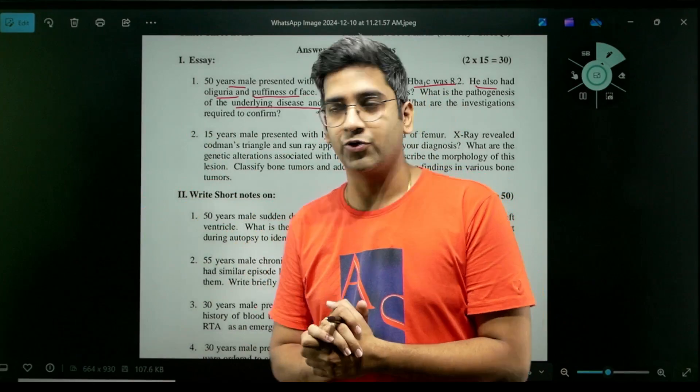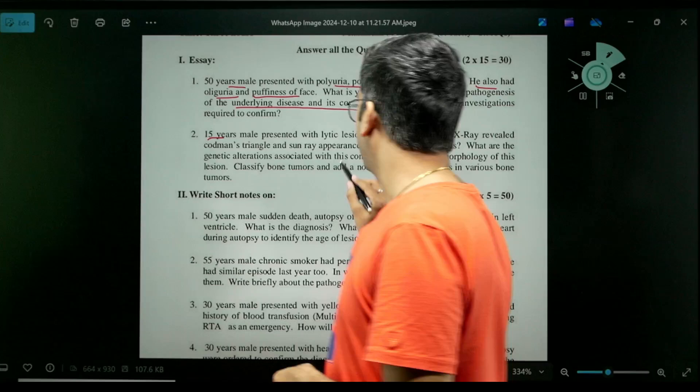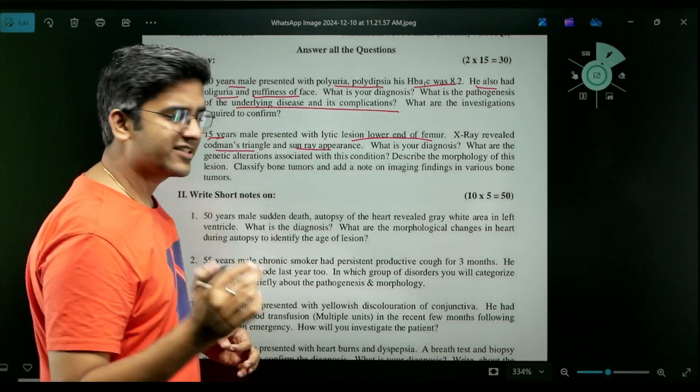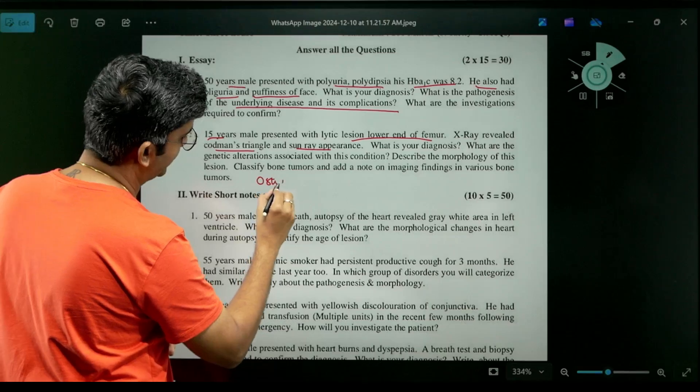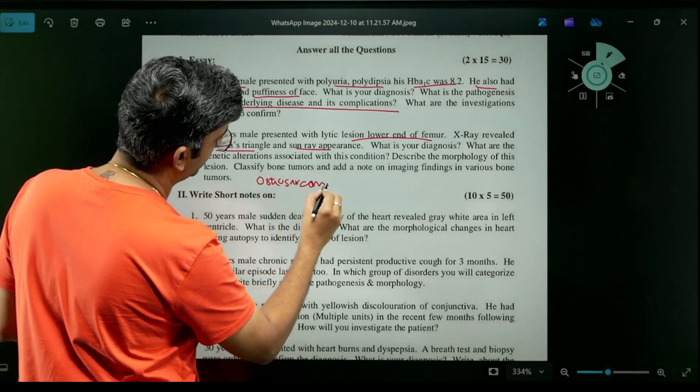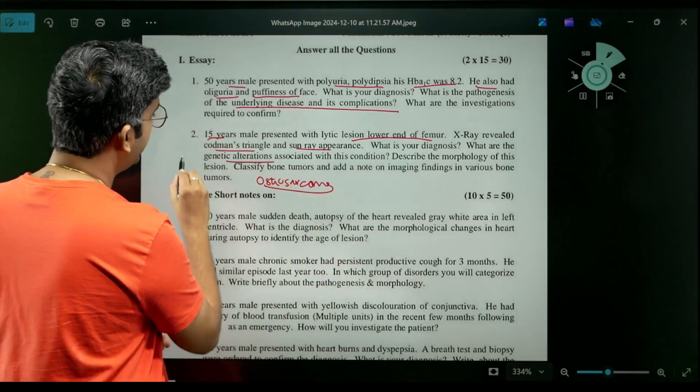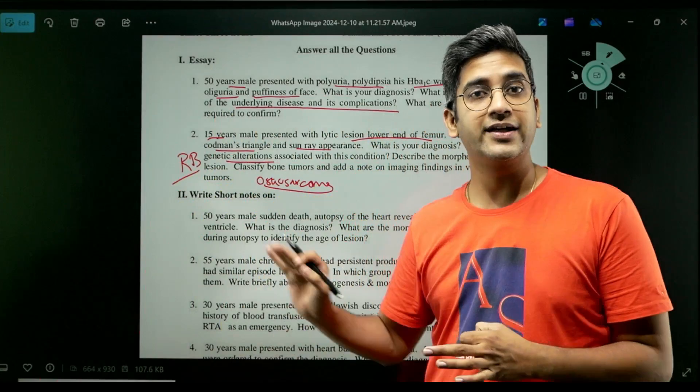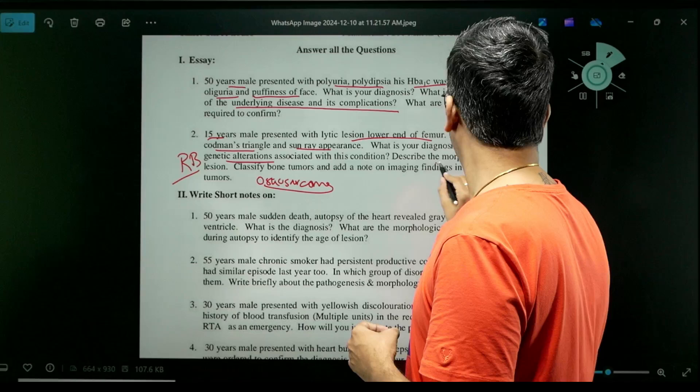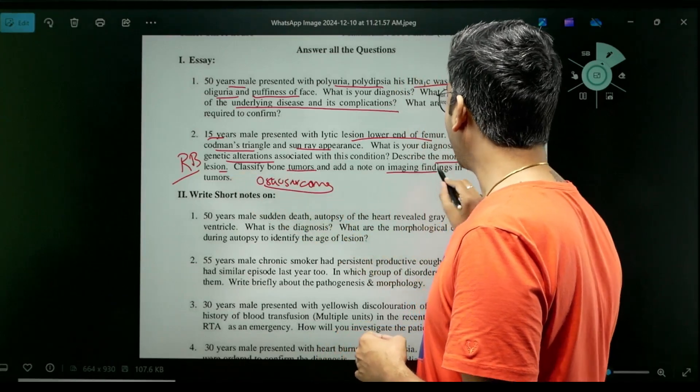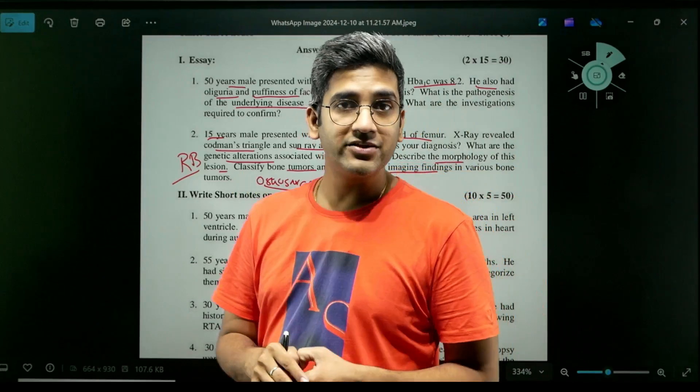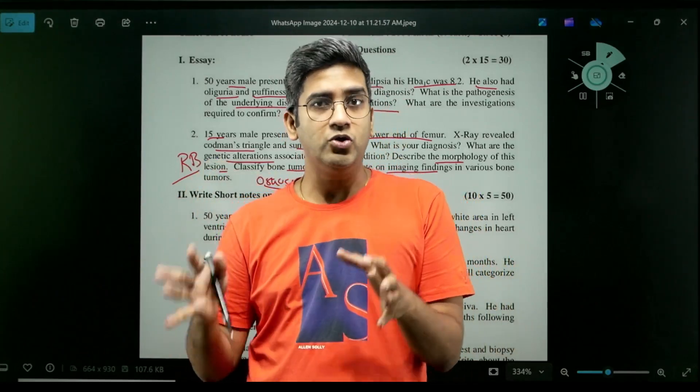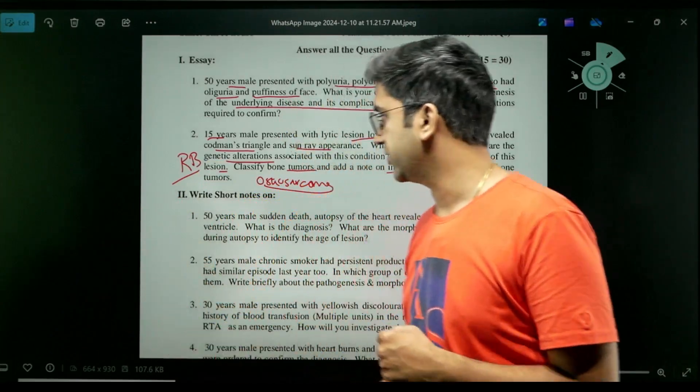Next question: a 15-year-old male present with a light declination in the lower end of femur. X-ray revealed a Codman's triangle, sunburst appearance. Classical x-ray features of osteosarcoma. It is a very classical x-ray feature of an osteosarcoma diagnosis. What are the genetic alterations? Please do write about retinoblastoma gene, that's the most important thing. MDM1, retinoblastoma genes are classical things altered in case of an osteosarcoma. And the morphology of the lesion. You know that - classify the bone tumors, add imaging findings of various bone tumors. When they say imaging findings, include the epiphyseal, metaphyseal, diaphyseal, then individual things like soap bubble appearance, Codman's triangle. Those also please include them. That will solve the second question here.